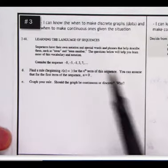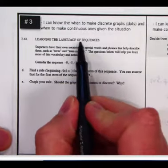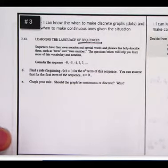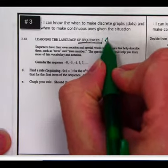In this particular problem, it does outline a sequence, and realistically, as soon as you see the word sequence, you immediately know that it's discrete. And you know that because, by definition, sequences are discrete.